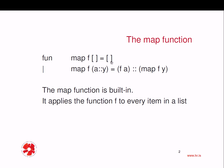The purpose of the map function is to return a list. In the case where we have an empty list, we cannot apply the function to any item, so we just return the empty list. If that's not the case, then we have another case which uses the pattern a double-colon y, where a is the head and y is the tail.